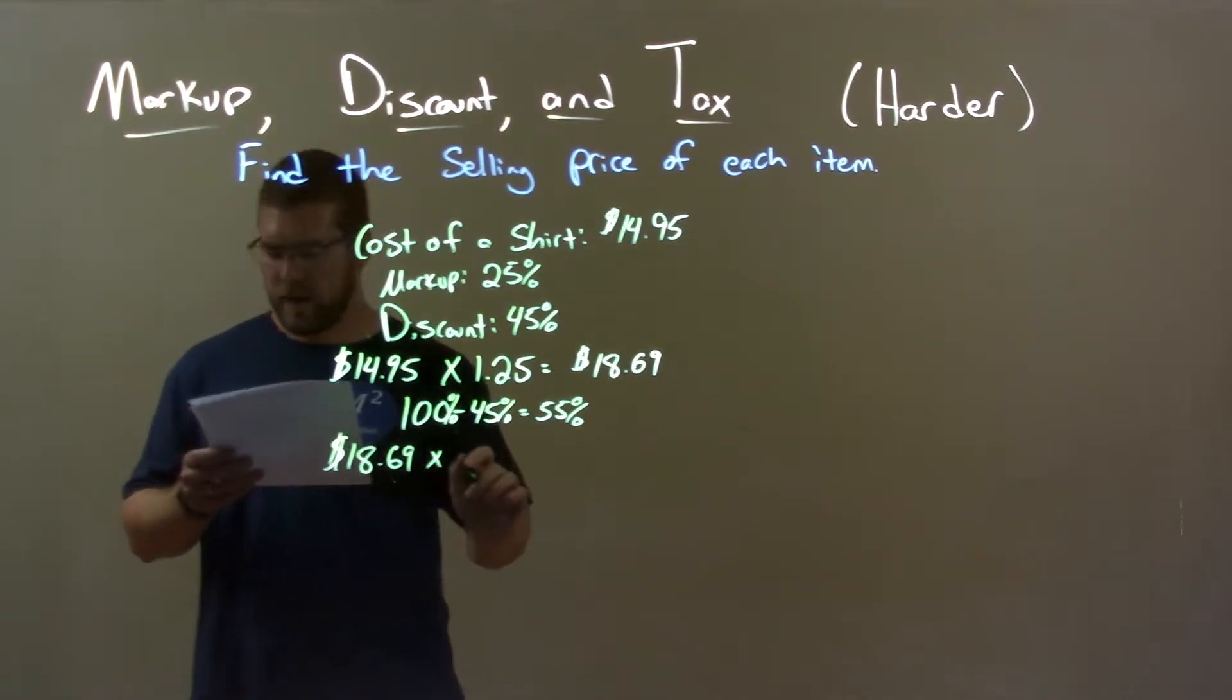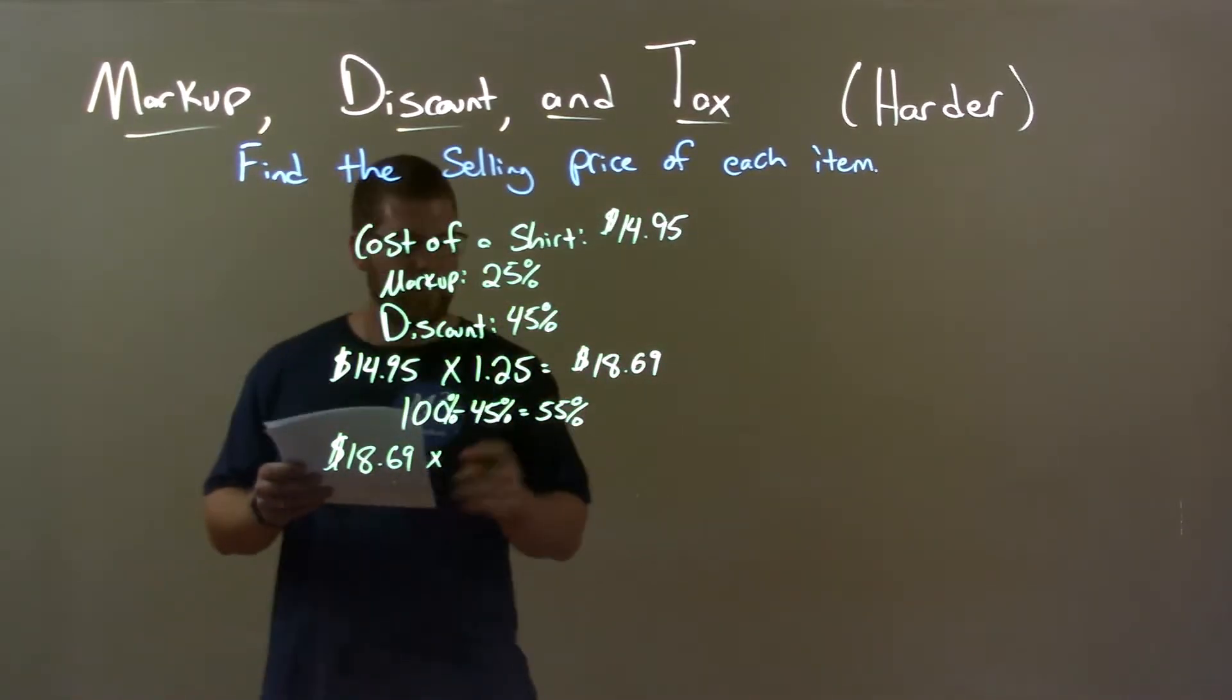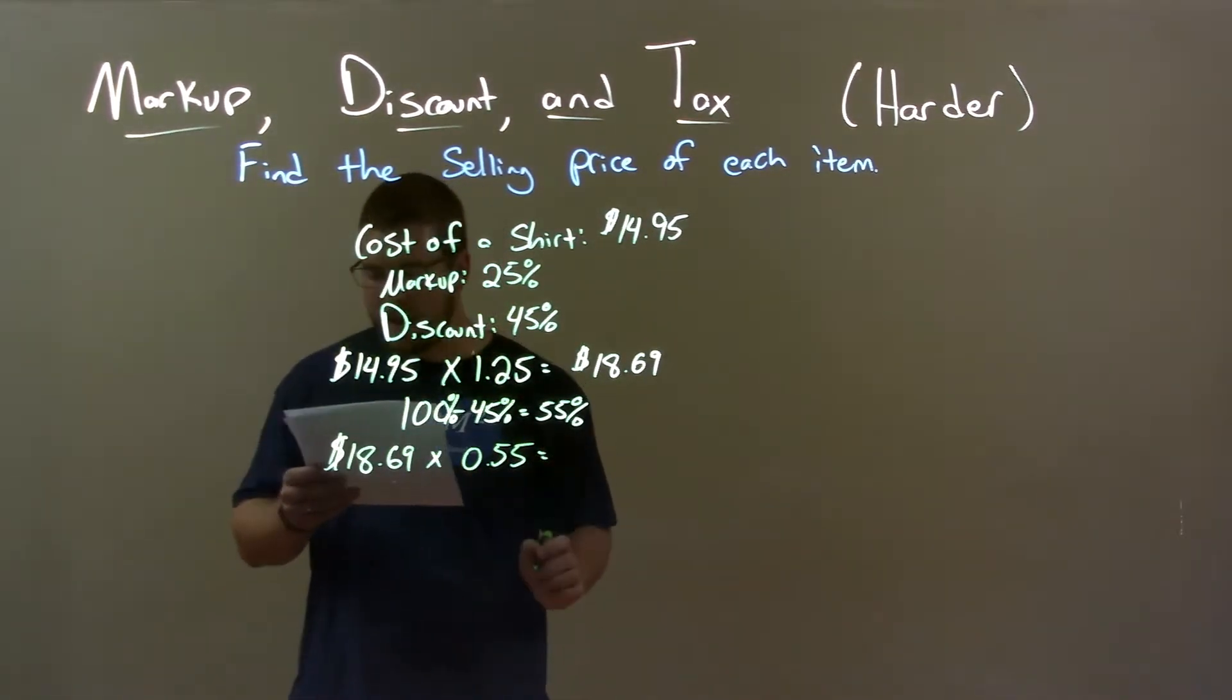So, we take that $18.69 and multiply that by 55% as a decimal, 0.55, and that gives me a final answer of $10.28.